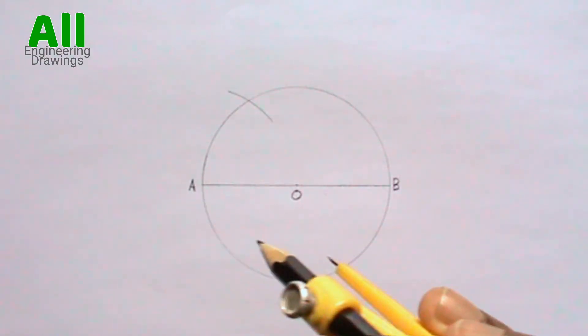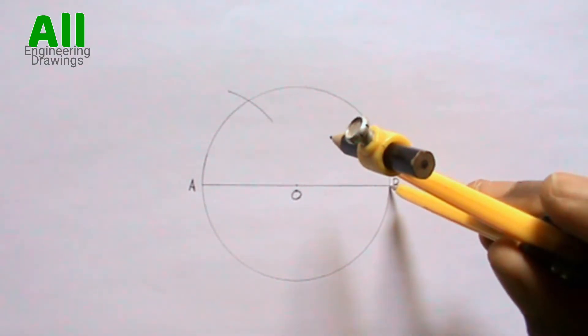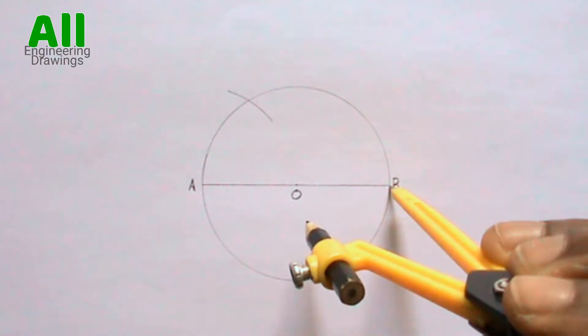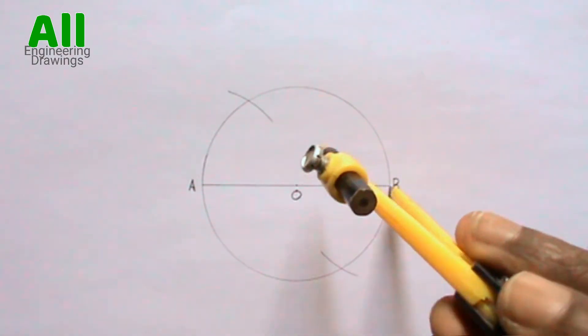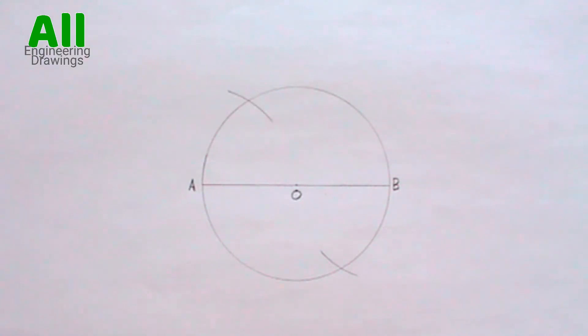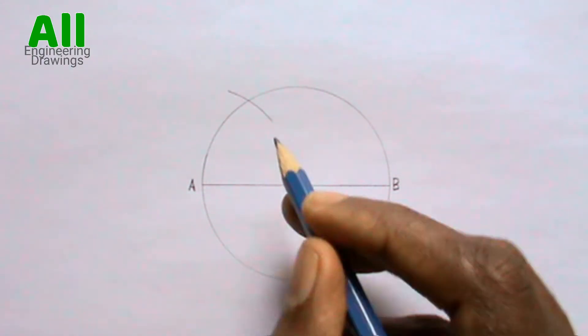Also place your compass on point B. Cut another arc. Label the points where the arcs intersect your circle.